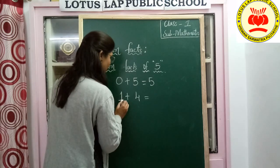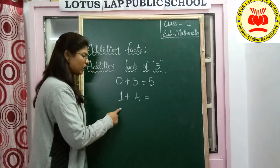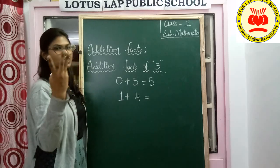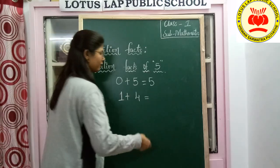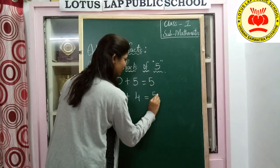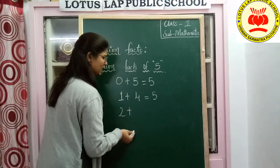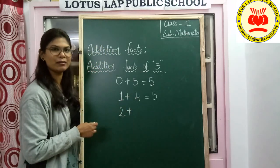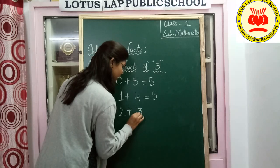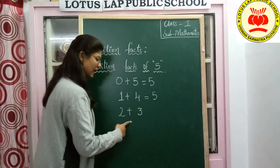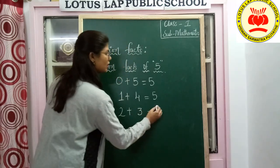1 plus 4 is? Start at 1 — 2, 3, 4 and 5. Now 1 is finished. Let's take 2. 2 plus — what number comes before? 3. 2 plus 3. 2 plus 3 gives? 5.